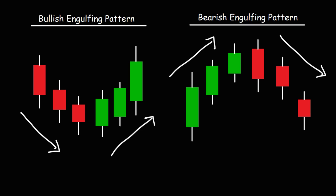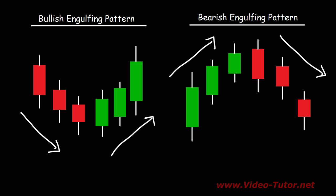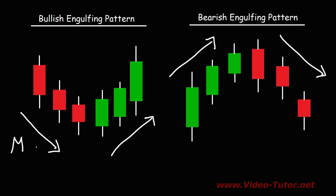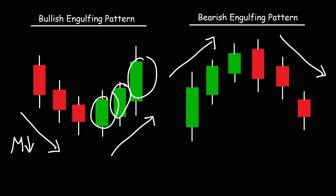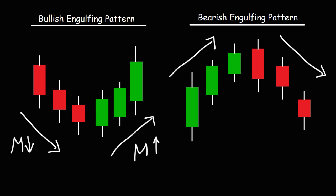Pop quiz: describe the changes in momentum for each of the four trends on the screen. Let's start with the trend on the left in the bullish engulfing pattern. During this downtrend, is momentum increasing or decreasing? Notice that the bodies of these candles are decreasing in size — therefore we could say that momentum is decreasing. The strength of the downtrend is getting weaker. For the uptrend on the right, the candles are getting bigger, so momentum is increasing. The strength of the uptrend is getting stronger. Therefore this is a strong reversal pattern.